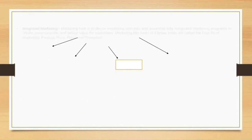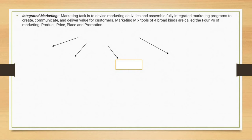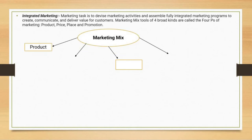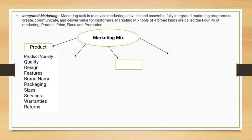Next is integrated marketing. Integrated marketing's task is to devise marketing activities and assemble a fully integrated marketing program to create, communicate and deliver value for customers. The marketing mix tools of four broad kinds are called the Four P's of marketing. The first P is Product, which includes product variety, quality, design, features, brand name, packaging, sizes, services, warranties and returns.